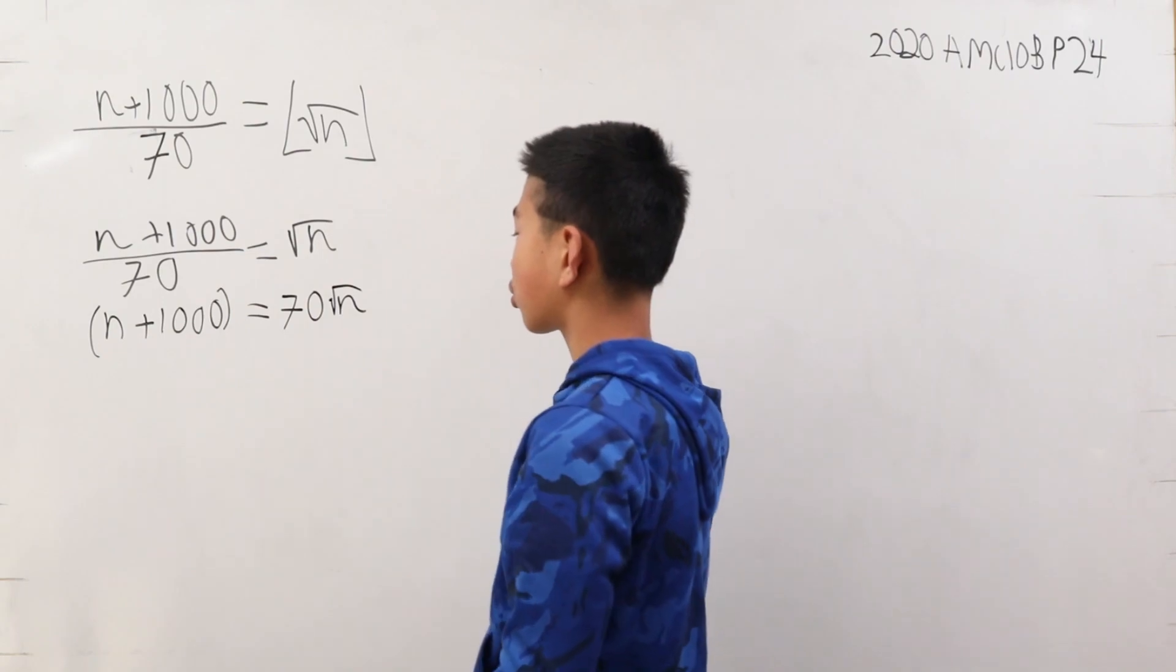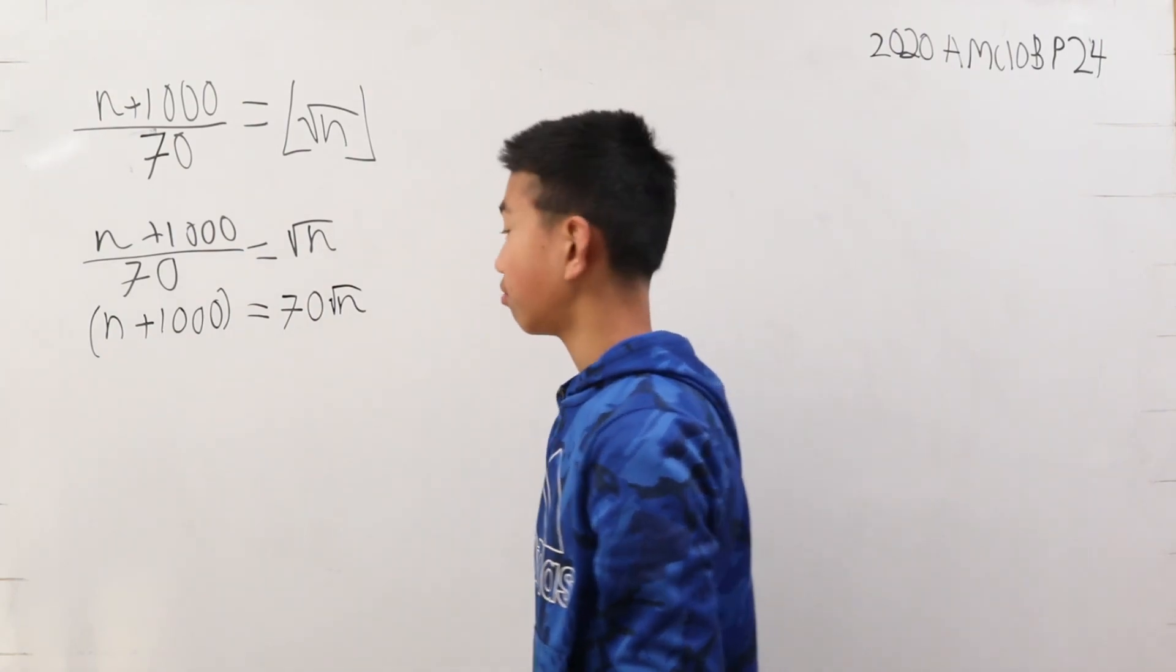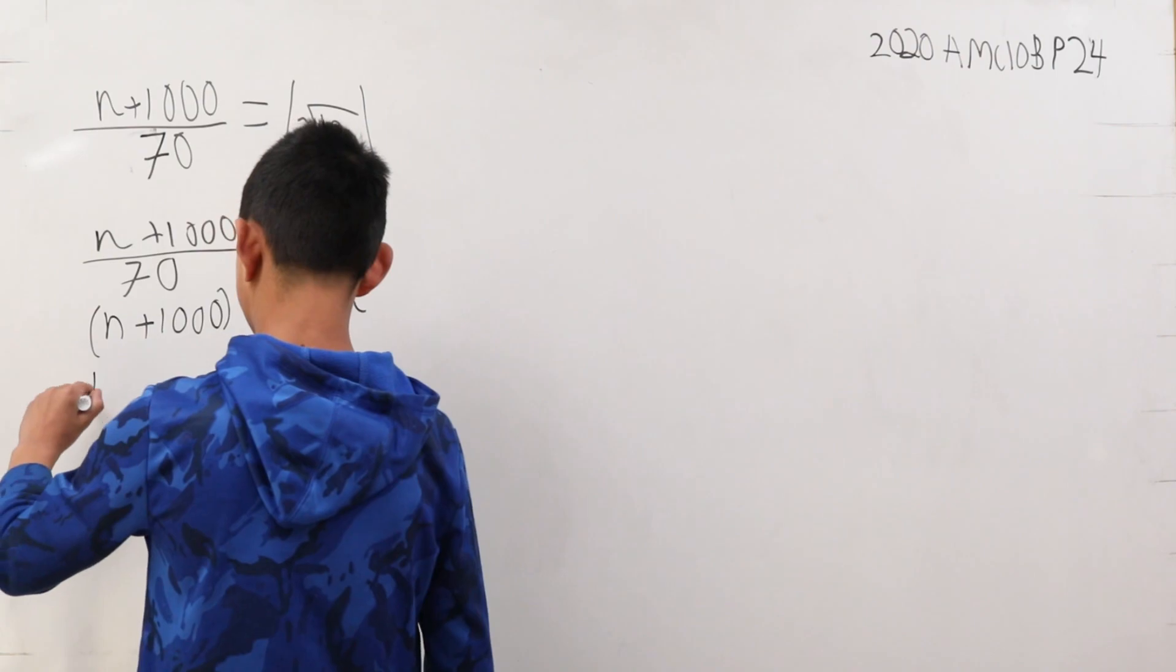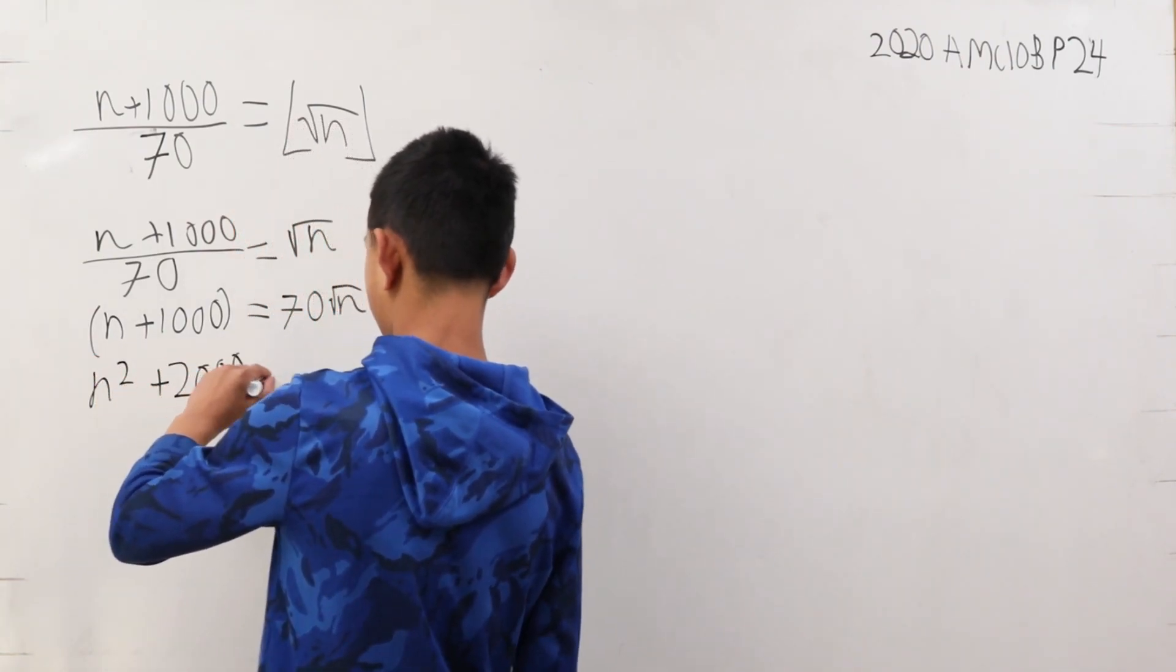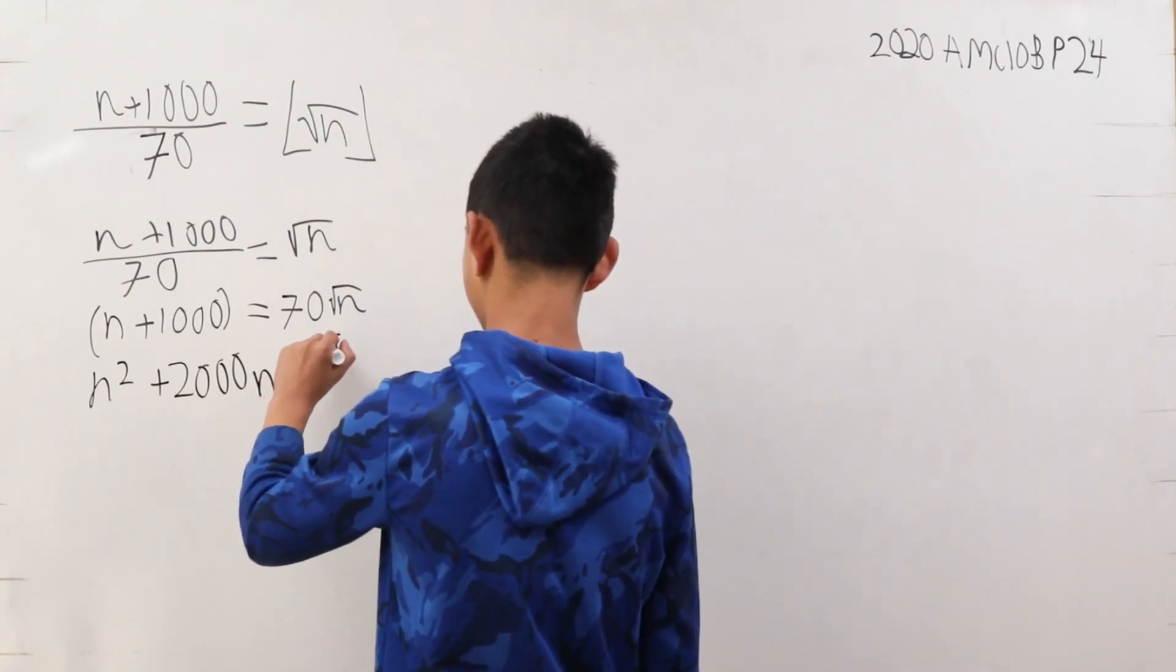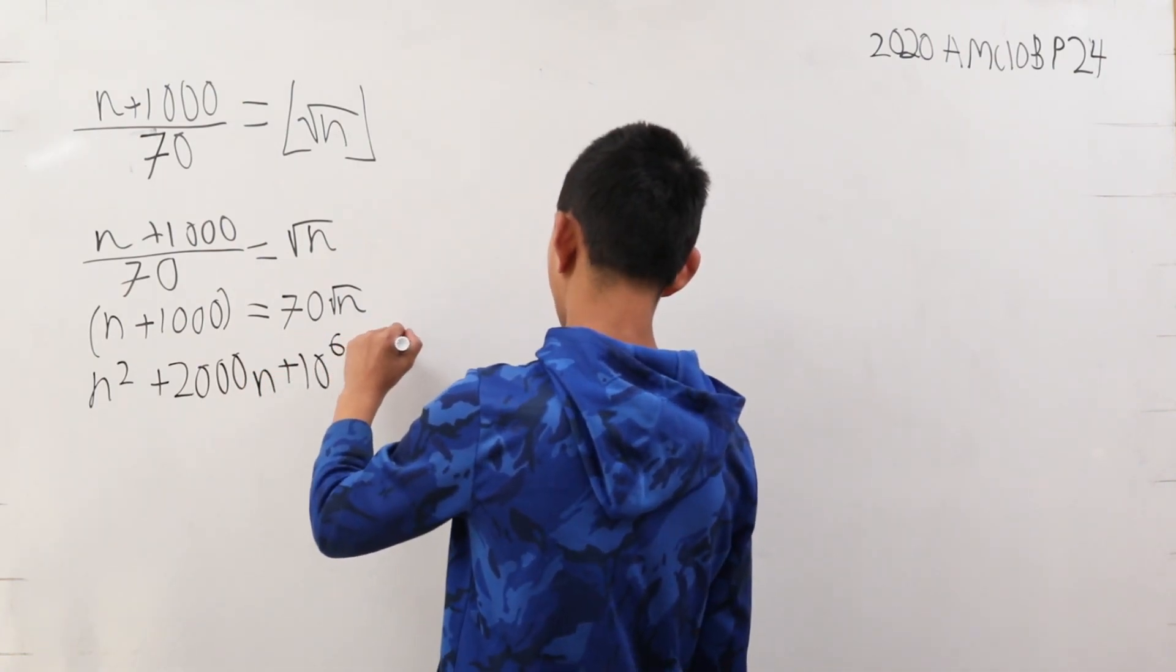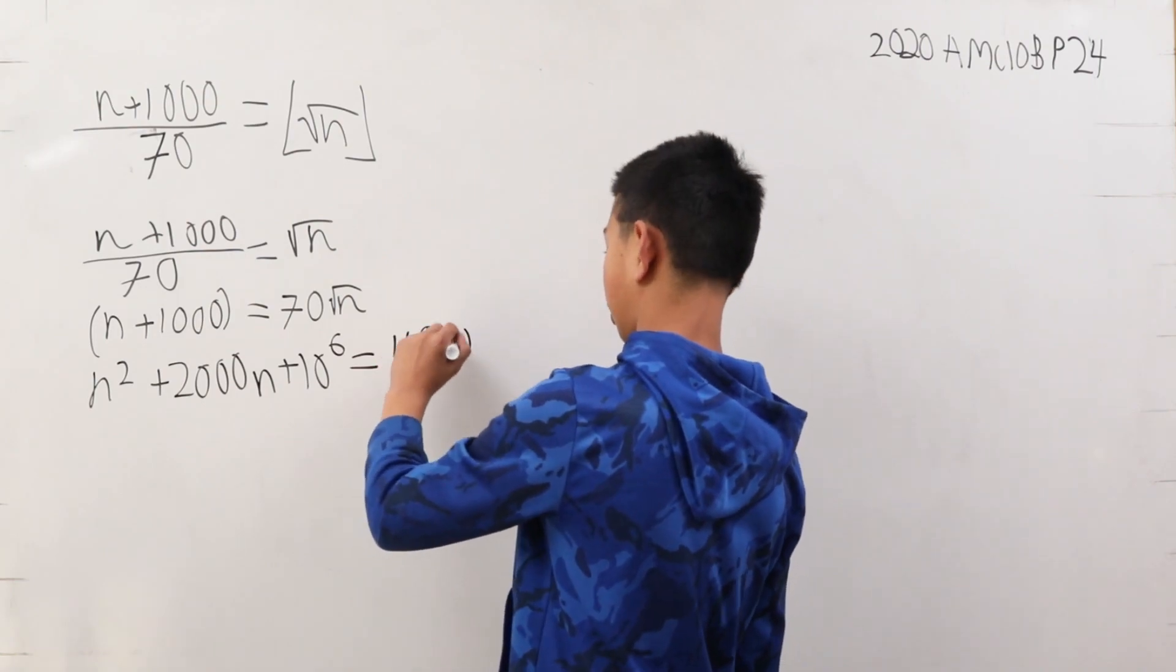We want to square both sides to get rid of this square root. So, we get n squared plus 2,000 n plus 10 to the power of 6. I'm just multiplying this out. This is equal to 4,900 n.